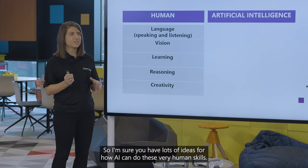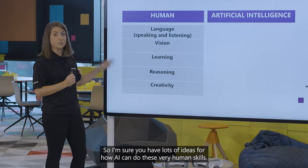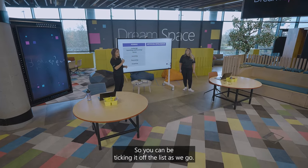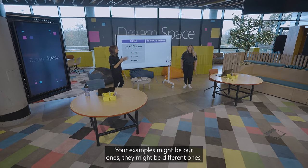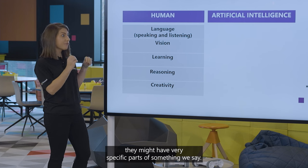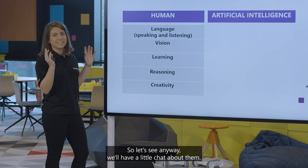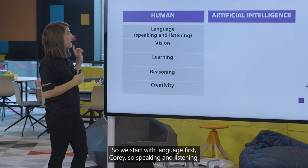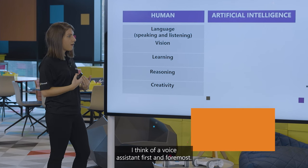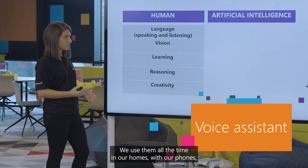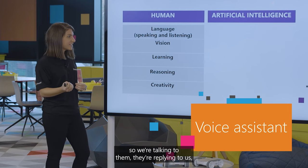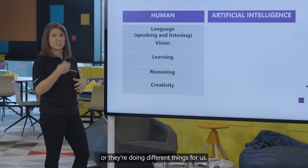I'm sure you have lots of ideas for how AI can do these very human skills. Starting with language — speaking and listening — the first thing that comes to mind is a voice assistant. We use them all the time in our homes and with our phones. We're talking to them, they're replying to us, or they're doing different things for us — like a personal assistant we have all the time.